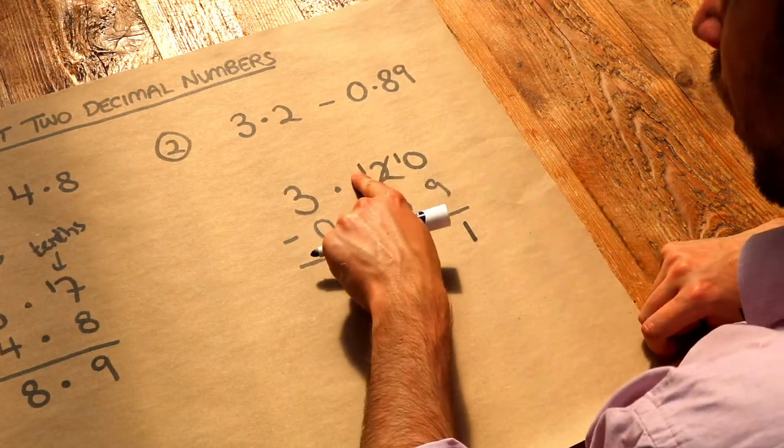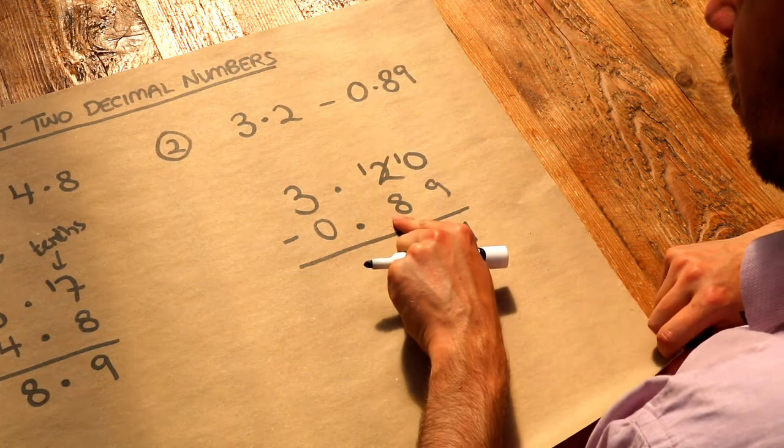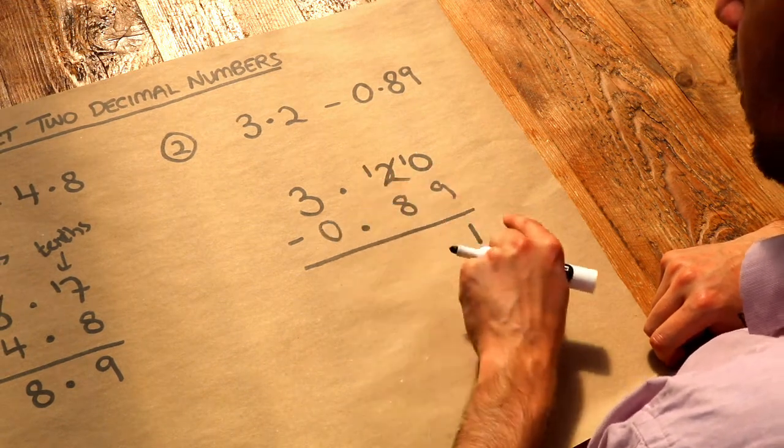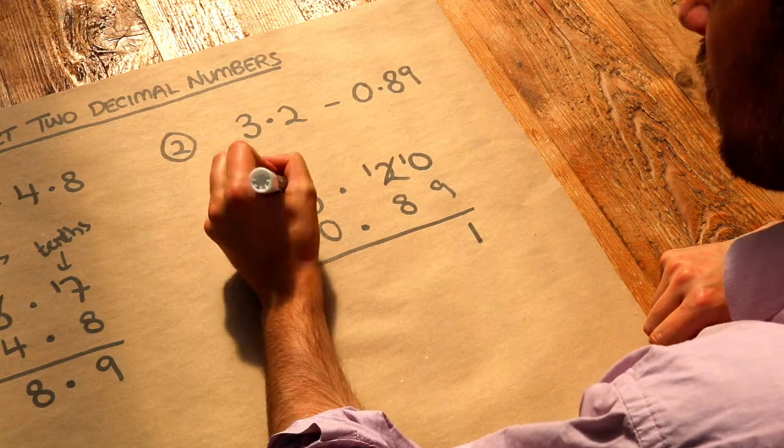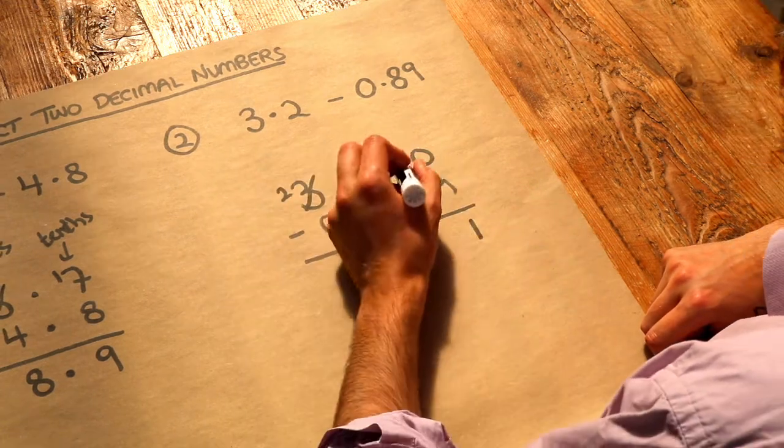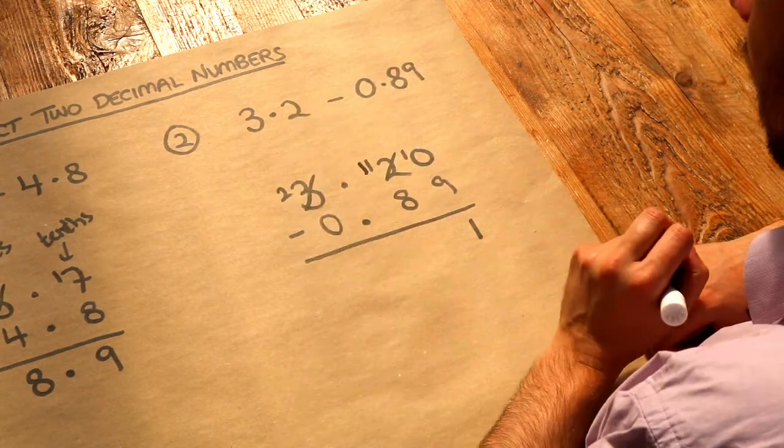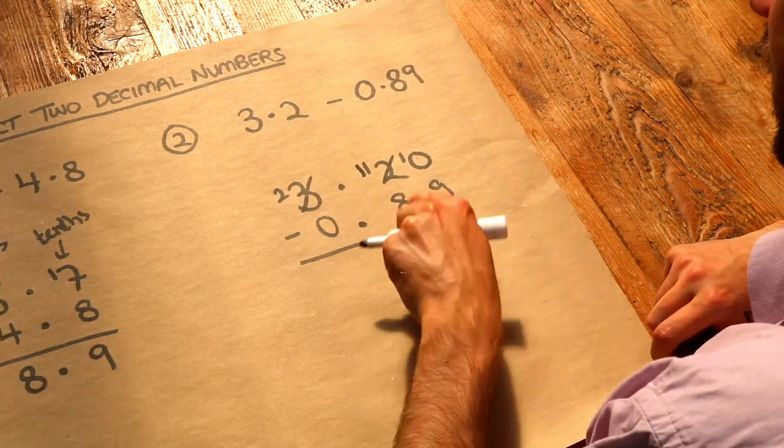We want to do 1 minus 8. We can't do that because 8 is bigger than 1, so again we borrow. The 3 drops down to 2, and then we can put that borrowed 1 here, so it becomes 11. 11 minus 8 is 3.